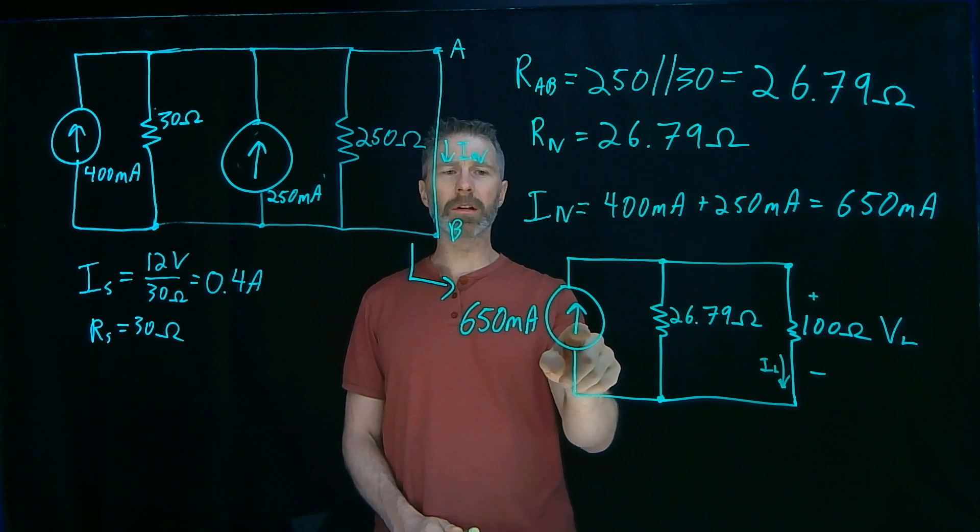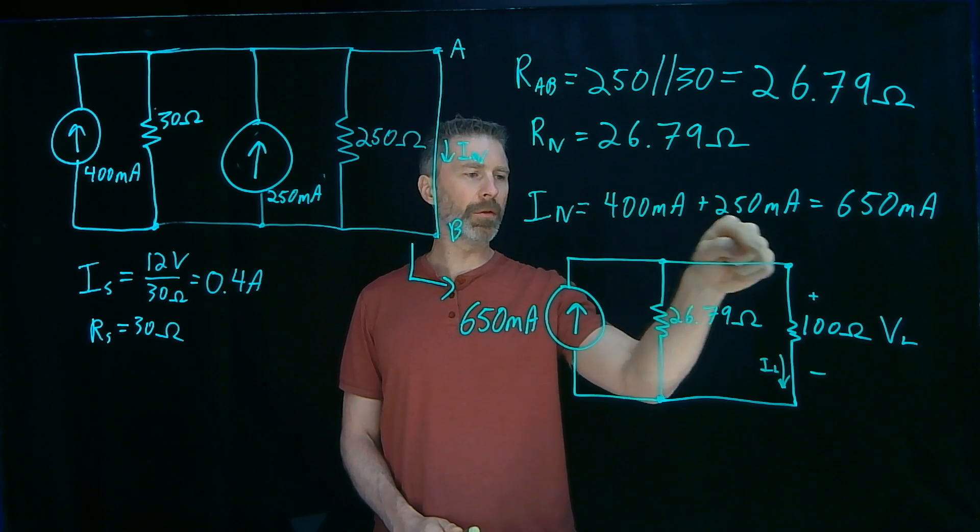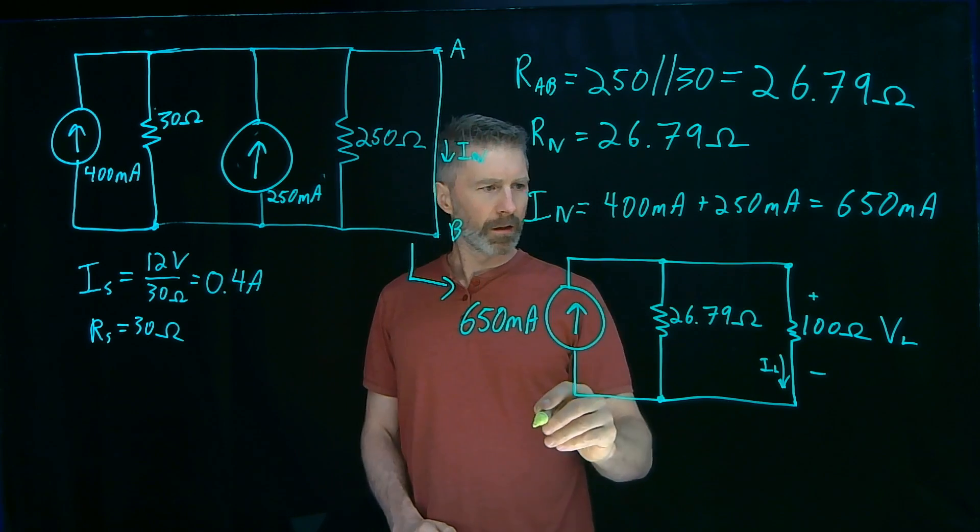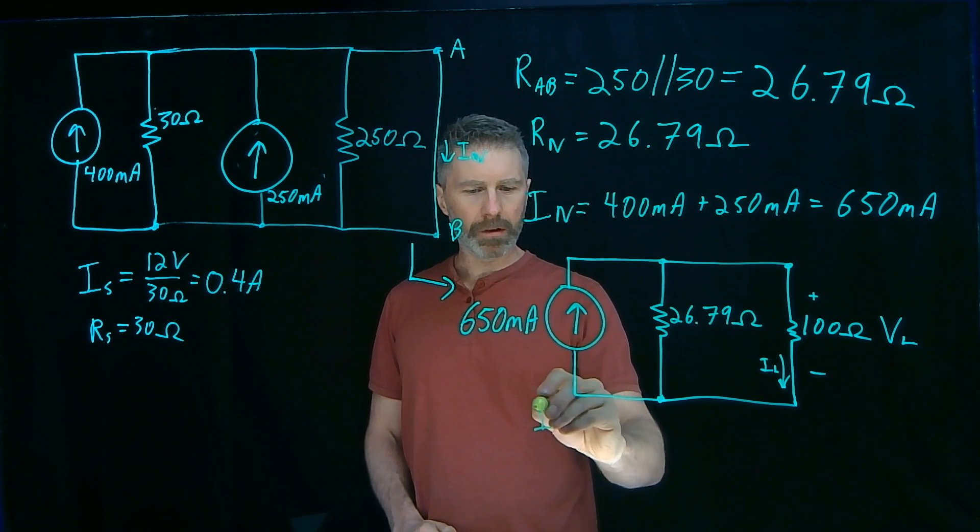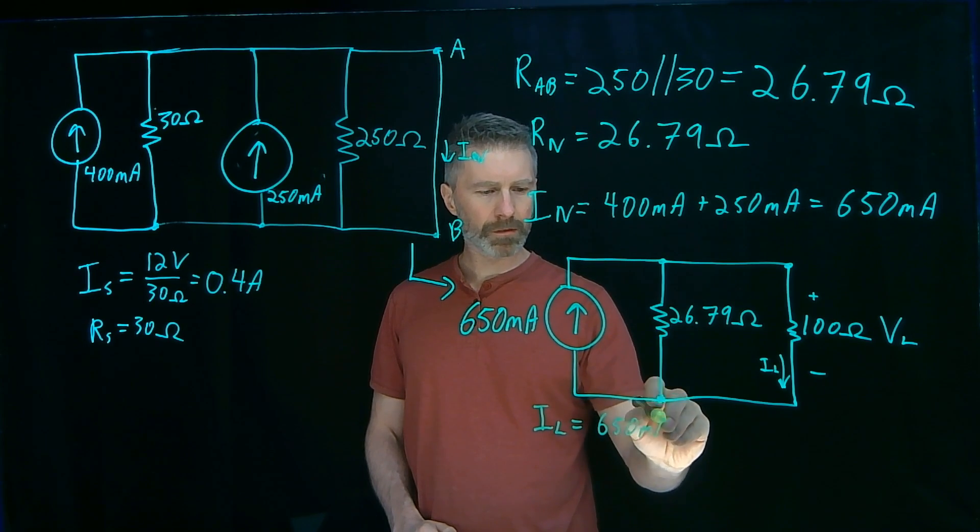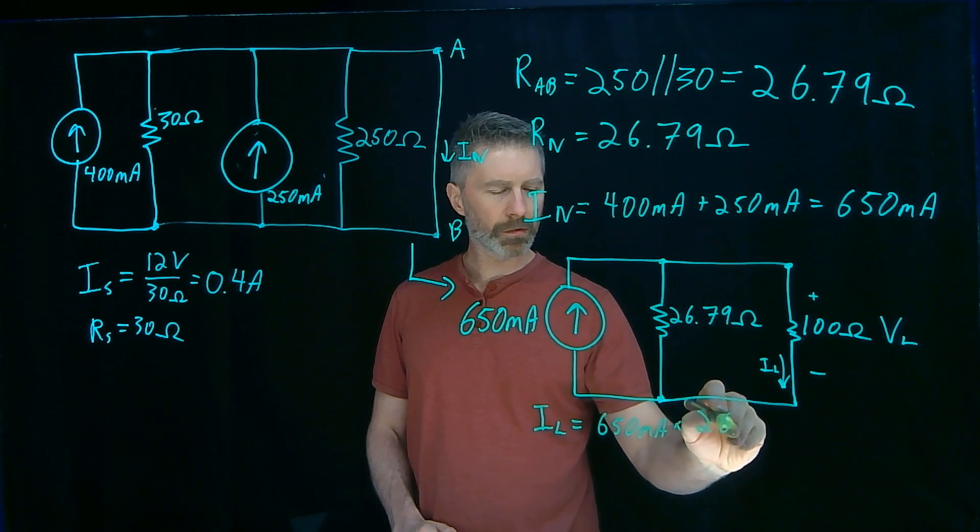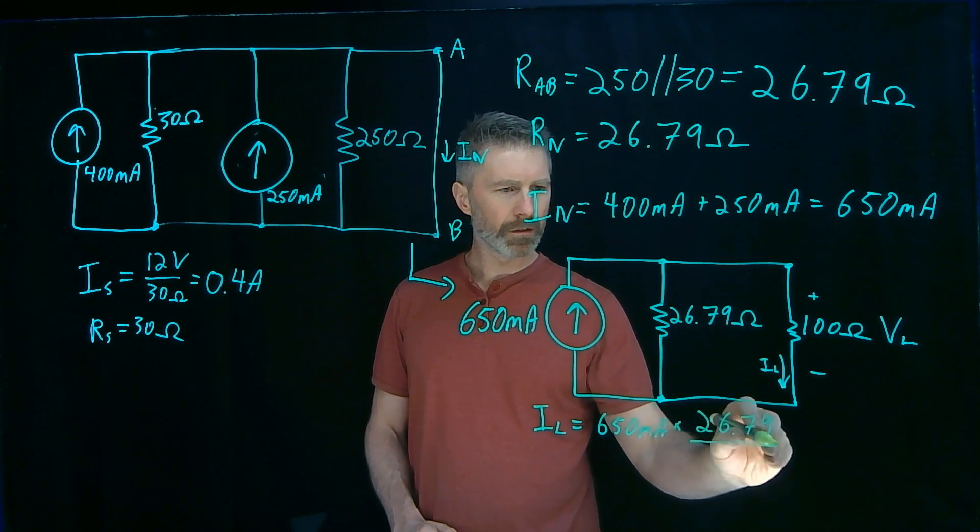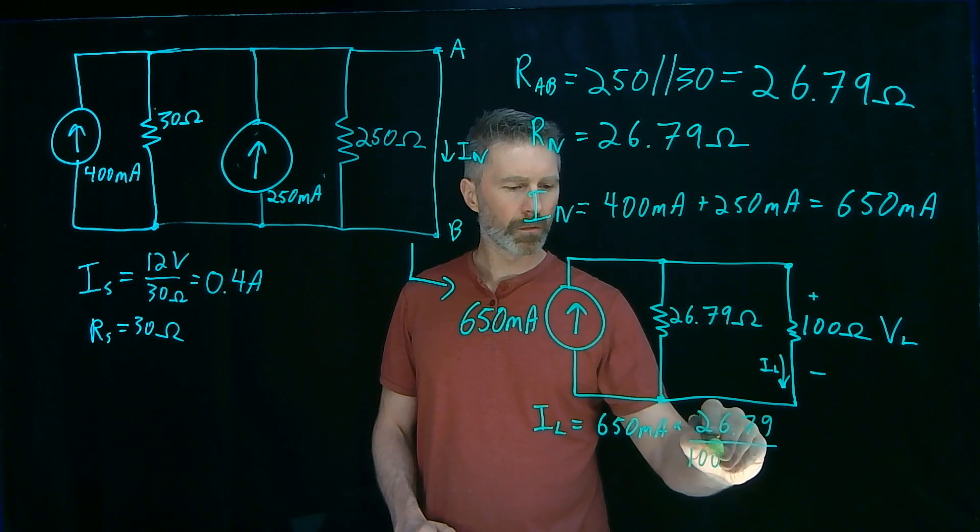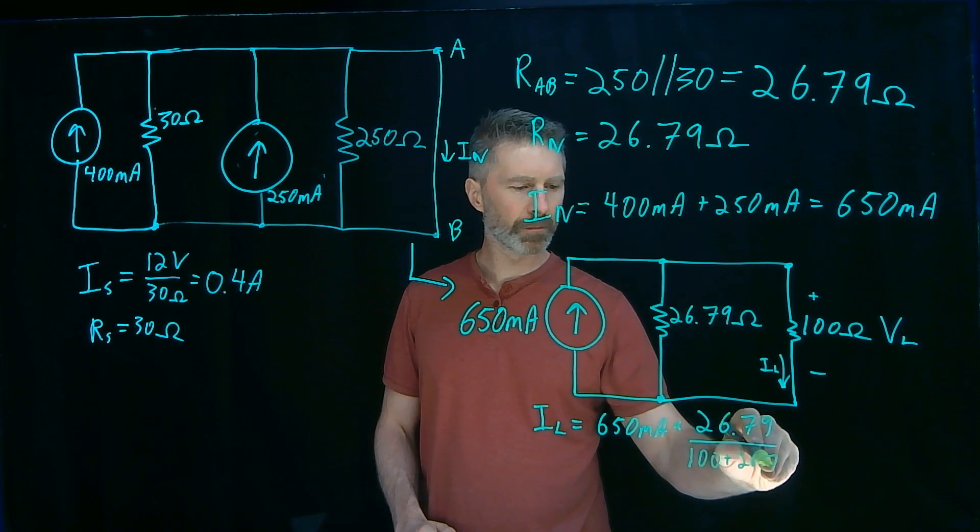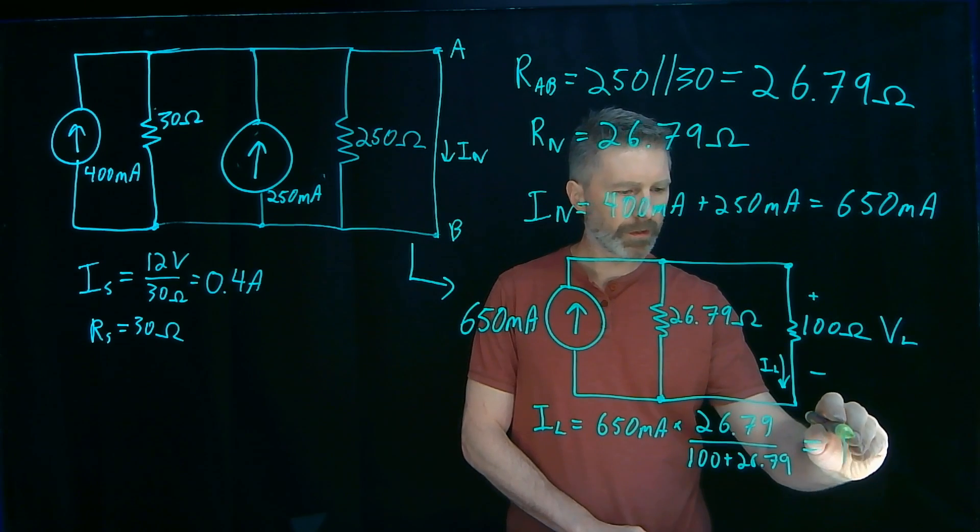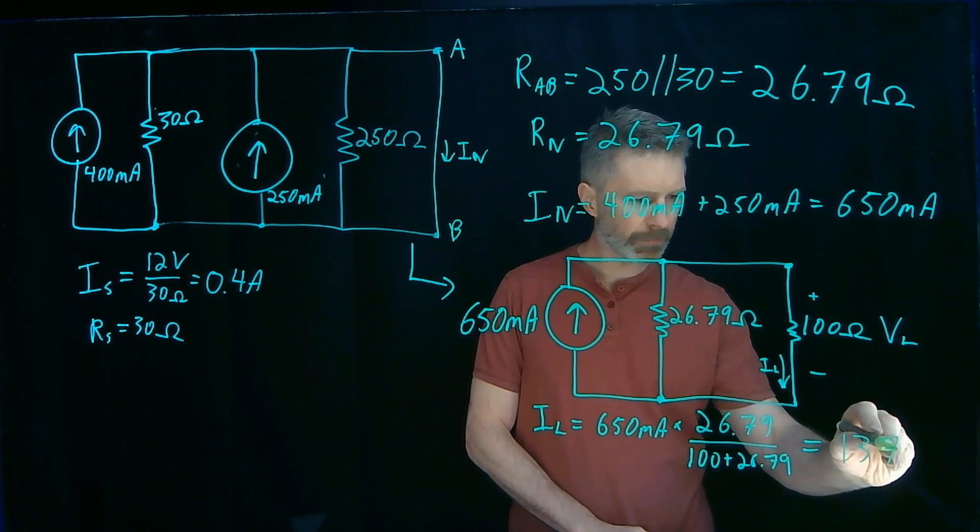I have 650 milliamps source and that's going through both of these resistors. I can figure out what's going through this resistor by doing a current divider. So IL will be 650 milliamps times 26.79 divided by the sum of those two resistors. 100 plus 26.79.